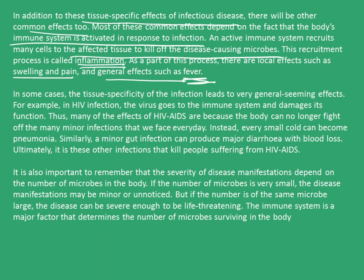In some cases, the tissue-specificity of the infection leads to very general-seeming effects. For example, in an HIV infection, the virus goes into the immune system and damages its functions. Thus, many of the effects of HIV-AIDS are because the body can no longer fight off the many minor infections we face every day. Every small cold can become pneumonia, and a minor gut infection can produce major diarrhea with blood loss, which is life-threatening. Ultimately, it is these secondary infections that kill people suffering from HIV-AIDS.